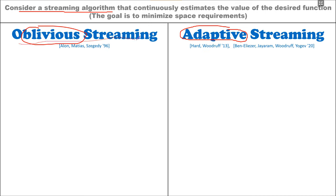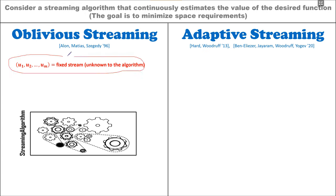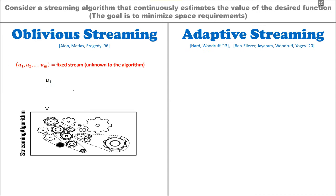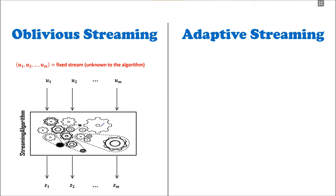In the oblivious or classical streaming model, we have a streaming algorithm and an input stream. We don't know this entire input stream, but we assume it is fixed in advance, unknown to the algorithm. On every time step, the algorithm gets the next element or update from the stream and responds with its current estimation for the value of the function. Then the algorithm gets the next update, responds with its next estimation, and so on.